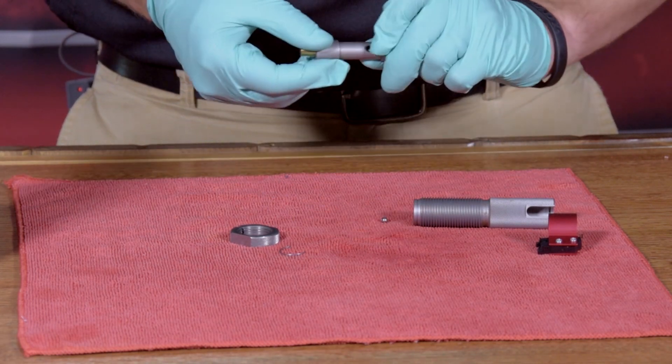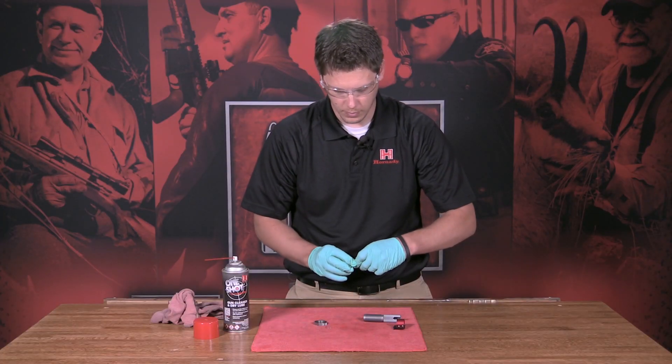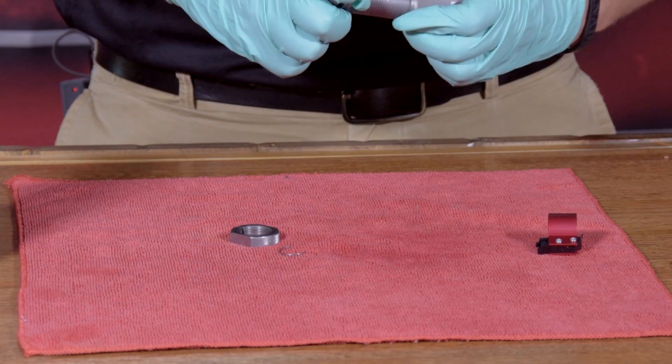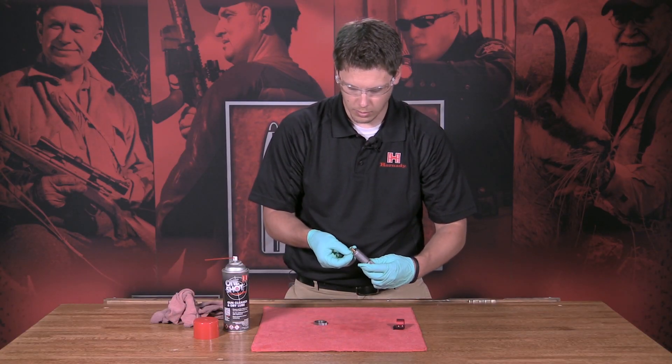Just put one on one side and hold it. Put the other one on the other side. Slide it right back up into the die. Put your lock ring on.